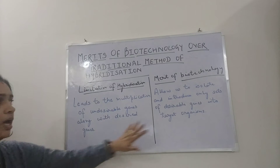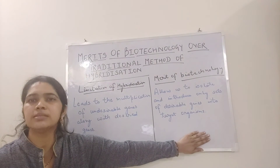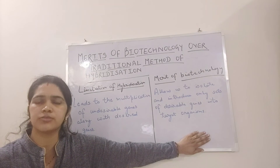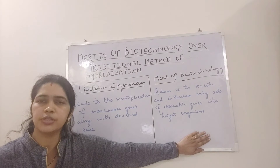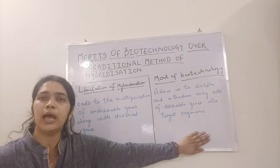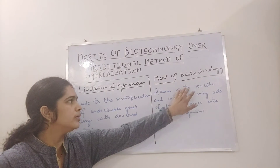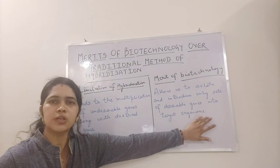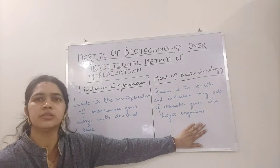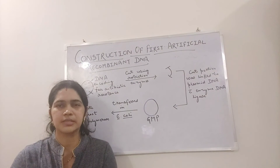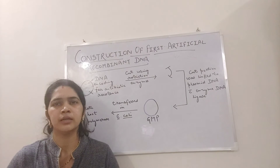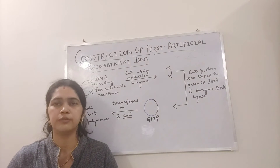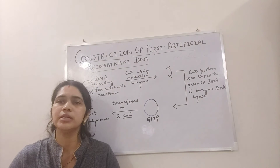Biotechnology overcomes this limitation, as it involves the construction of artificial recombinant DNA and use of gene cloning that allow us to isolate and introduce only sets of desired genes into a target organism. The first artificial recombinant DNA was constructed by Stanley Cohen and Herbert Boyer in 1972, achieved by linking a gene that encodes for antibiotic resistance with the native plasmid of Salmonella typhimurium.